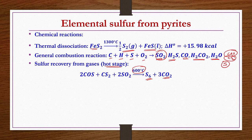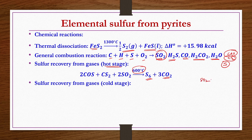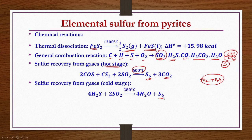Sulphur recovery from gases also takes place at a lower temperature stage known as the cold stage. Here, catalytic conversion of SO2 and H2S takes place to get water vapour and sulphur vapours. These sulphur vapours can be condensed using molten sulphur to obtain the required elemental sulphur.